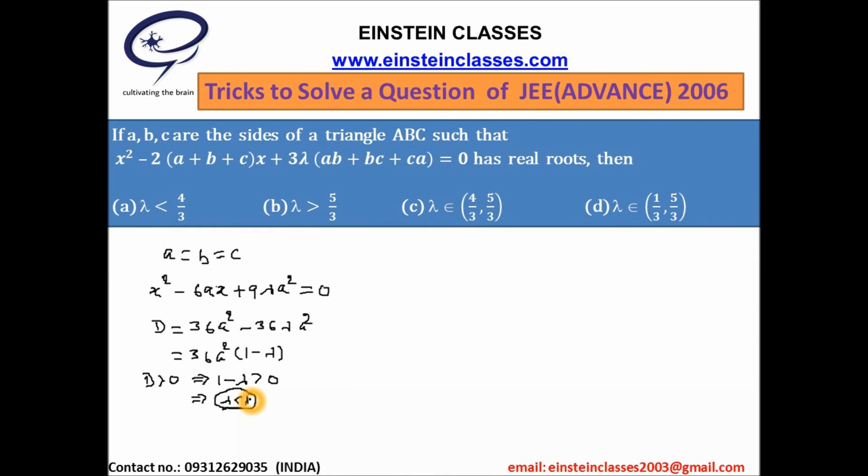To consider the special case of equilateral triangle, λ must be less than 1, but in this case λ belongs to (1/3, 5/3). That means it restricts the value less than 1/3, and hence the correct option will be A.